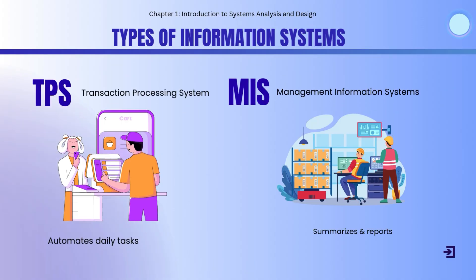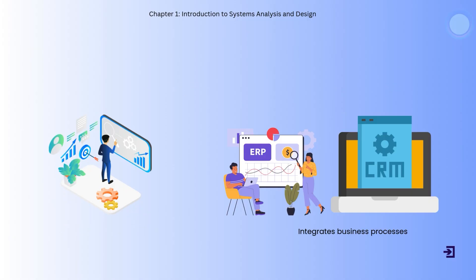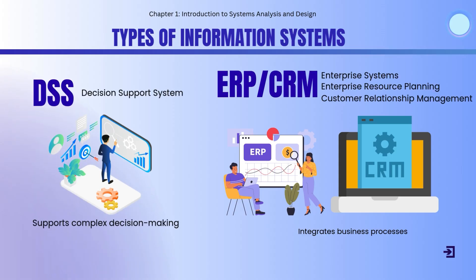There are different types of Information Systems. A Transaction Processing System, or TPS, automates routine daily tasks like sales. A Management Information System, or MIS, summarizes data and generates reports. A Decision Support System, or DSS, helps in analyzing data for complex decisions. And enterprise systems such as ERP and CRM integrate business processes across the entire organization.